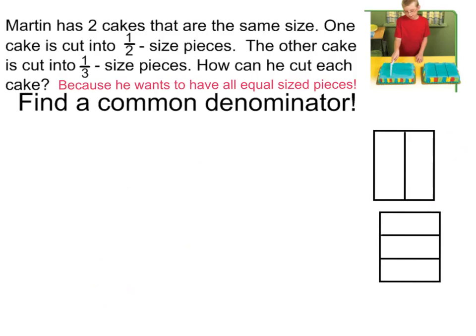Let's take a look at our first example. Martin has two cakes that are the same size. One cake is cut into one-half size pieces, while the other cake is cut into one-third size pieces. How can he cut each cake so he wants to have all equal size pieces? We have to look at both cakes and we want them to have the same size pieces.